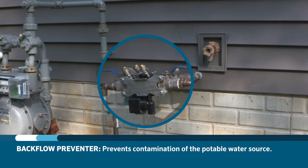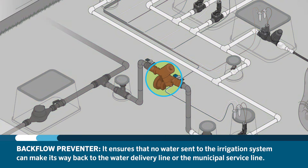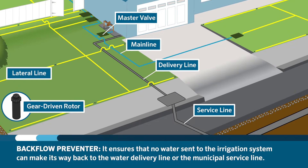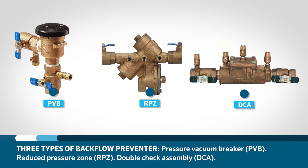Most cities require the use of a device known as a backflow preventer to prevent contamination of the potable water source by ensuring that no water directed to the irrigation system can make its way back to the delivery line or municipal service line. The three most commonly used are a pressure vacuum breaker or PVB, a reduced pressure zone or RPZ, and a double check assembly or DCA. After water passes through the backflow prevention device, internal check valves prevent water from flowing in the opposite direction. Check your local code to determine which backflow prevention device is required for your system.